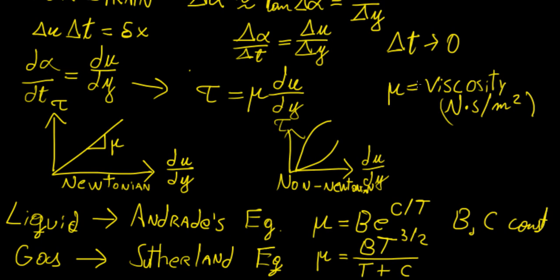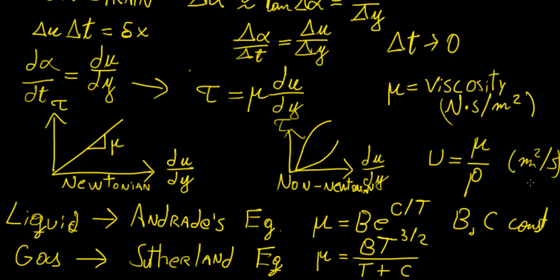The last thing to cover is kinematic viscosity, usually represented by a different Greek letter. It is simply the ratio of dynamic viscosity to the density of the fluid, with units of meters squared per second. In general, we use dynamic viscosity for most analysis — kinematic viscosity is just a ratio that may be useful in some specific analyses.